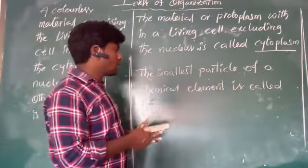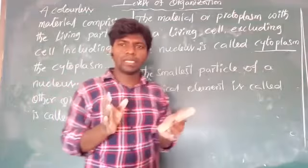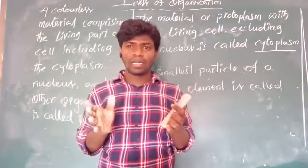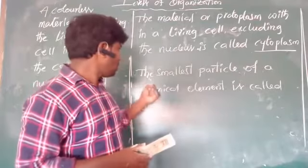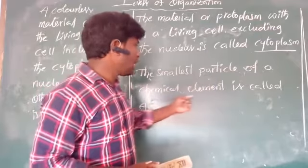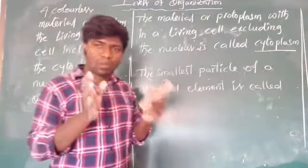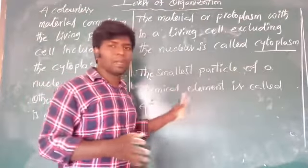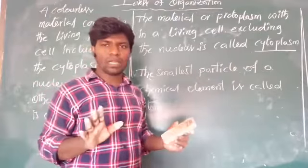Protoplasm is formed by cytoplasm, and cytoplasm is made of molecules. Molecules are groups of atoms. The smallest particle of a chemical element is called an atom.